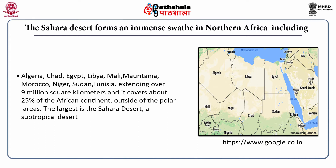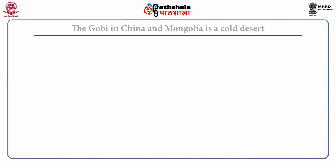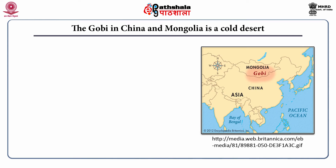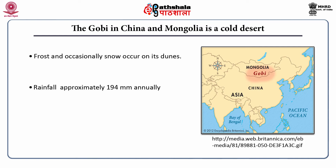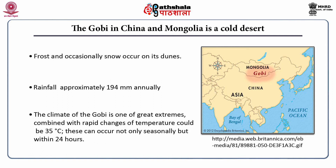This map shows the different countries through which the Sahara desert extends. The Gobi in China and Mongolia is a cold desert where frost and occasionally snow occur on the dunes. Rainfall is approximately 194 mm annually. The climate of the Gobi is one of great extremes — temperature changes of 35 degrees Celsius can occur not only seasonally but within 24 hours.